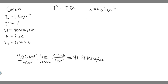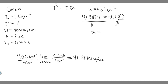Now we can plug into the equation. Omega equals 41.8879, omega₀ is 0, so we have 41.8879 equals alpha times 8 seconds. Dividing both sides by 8 gives alpha equals 41.8879 divided by 8, which equals 5.2359 radians per second squared. The units work out because radians per second divided by seconds gives radians per second squared.